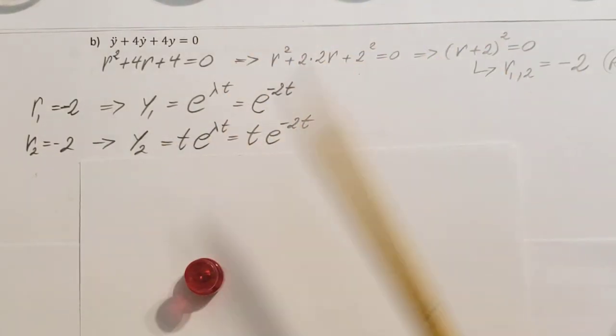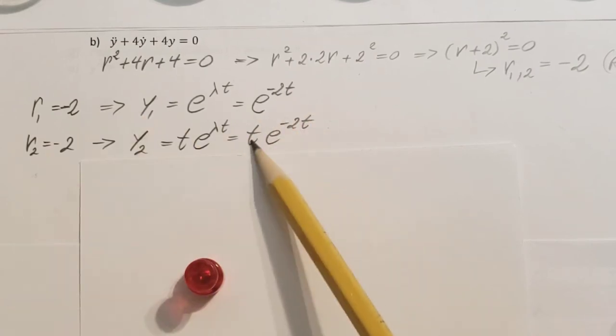So that's what's happening here: e negative 2t with the t in the front, right here.